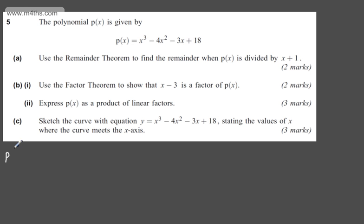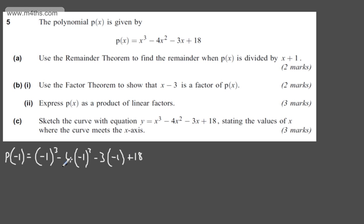All we need to do here is evaluate p(-1): (-1)³ - 4(-1)² - 3(-1) + 18. This gives us -1 - 4 + 3 + 18, so we've got 21 minus 5, which gives us 16. So we can say that when p is divided by x + 1, the remainder is 16.